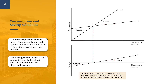Disposable income, consumption, and saving are all interconnected. The 45-degree line is a reference line representing all points where consumption equals disposable income. At point E — the break-even income — the amount of consumption is exactly equal to the amount of income. This is the level of disposable income at which households plan to consume all of their income and save none of it, so saving is zero in the diagram underneath.